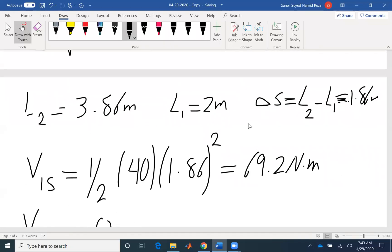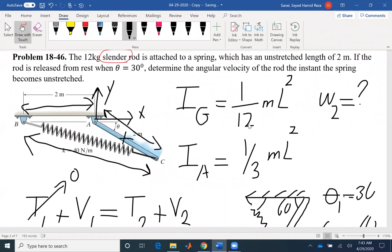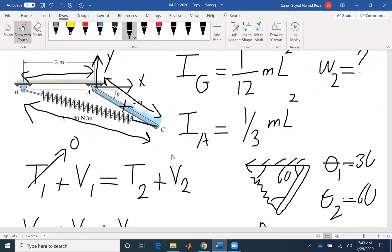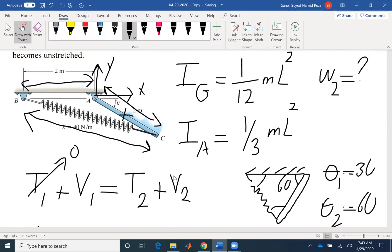If we go back to the problem and review, you would see that for the initial case, we did not have any kinetic energy. We had two types of potential energy. For the final case, we had kinetic energy and only one type of potential energy. The spring was unstretched. Probably the trick of this problem is the geometry to find theta or to find this length. The rest is a typical conservation of energy problem.